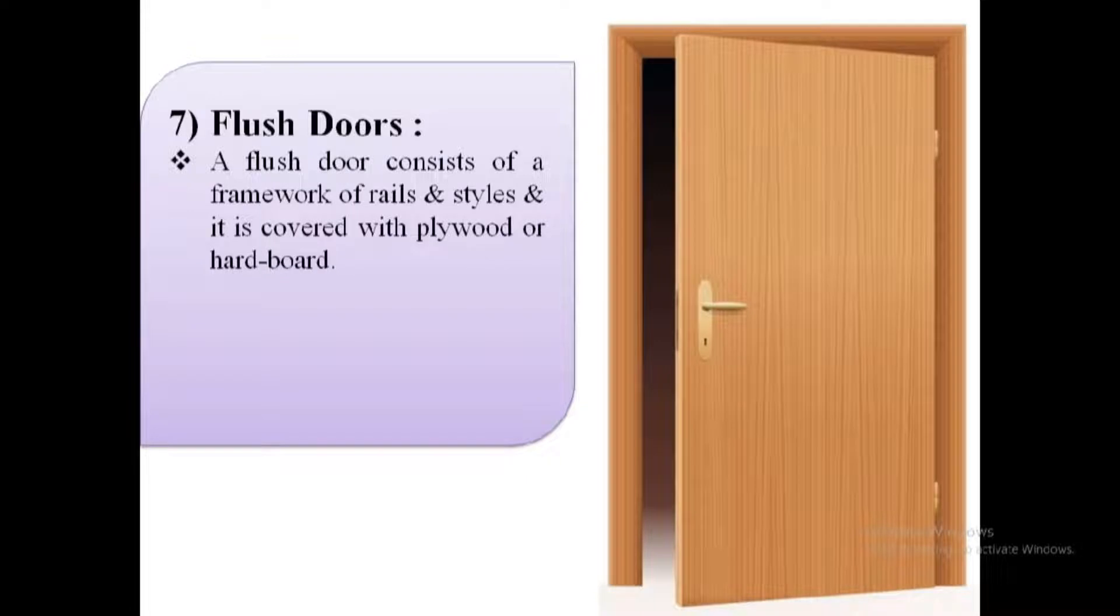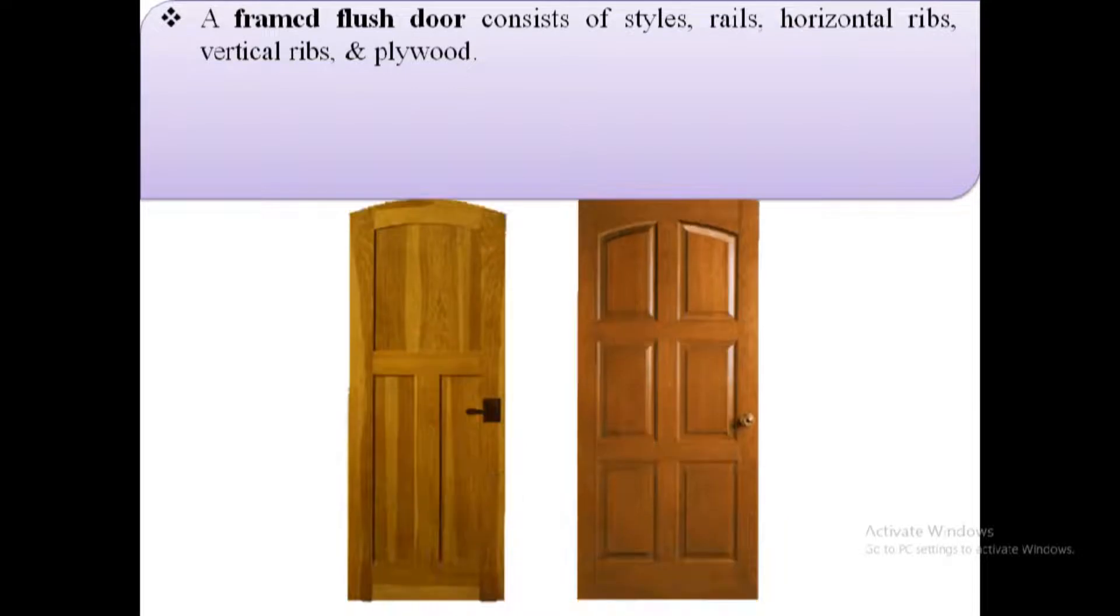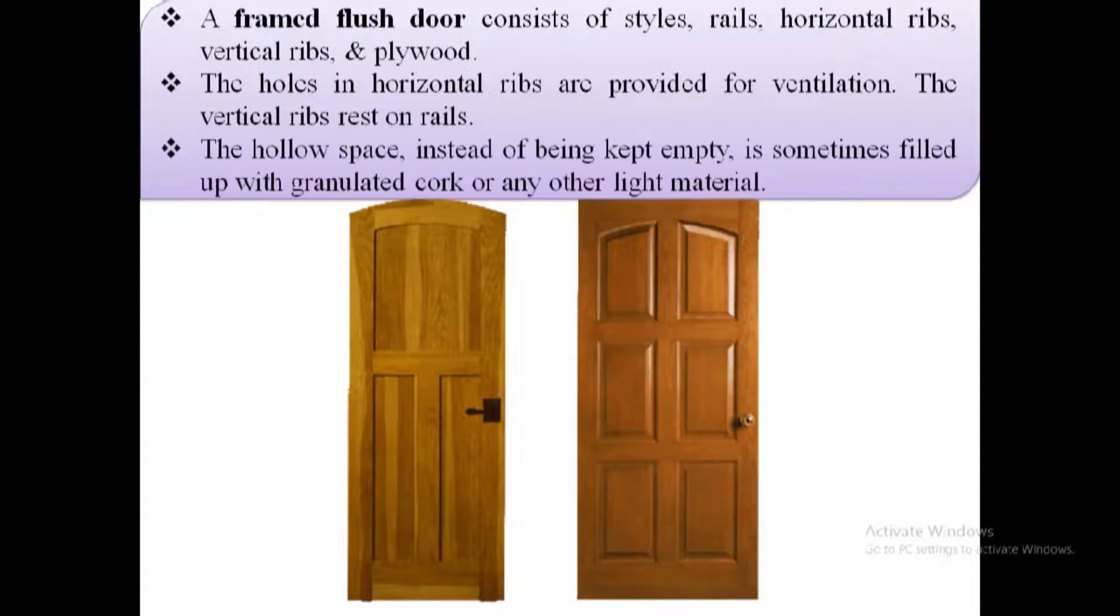Flush doors. They consist of solid skeleton covered on both sides with plywood or veneers. This skeleton is made by vertical members, styles, and rails to connect and join those vertical members. They appear as flush and jointless surfaces.